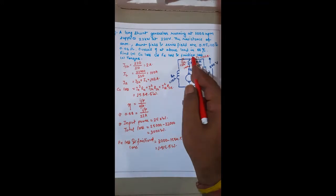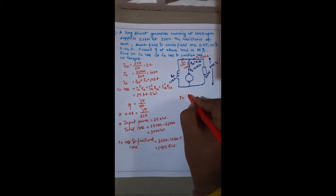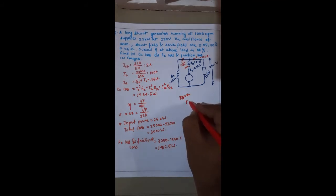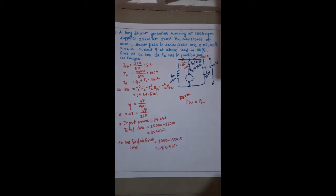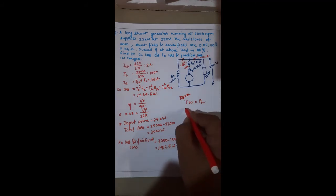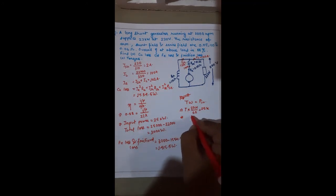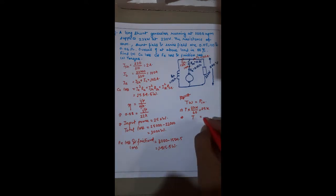Our second answer is 1415.5 watt. Now for the torque: torque × omega = input power. Omega = 2πN / 60. So torque = 25000 / (2π × 1000 / 60) = 238.74 newton meter.